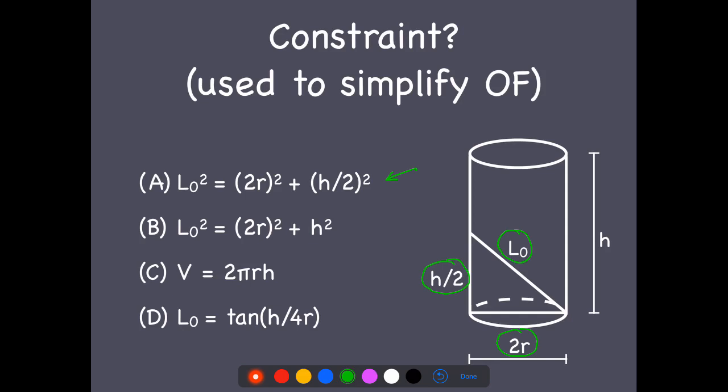Is it a constraint that we're interested in? Well, what it does is we're fixing L₀. So that's based on the price, right? We have a certain amount of money in Kepler's pocket. So this is actually a number.